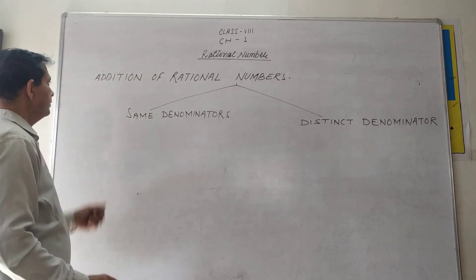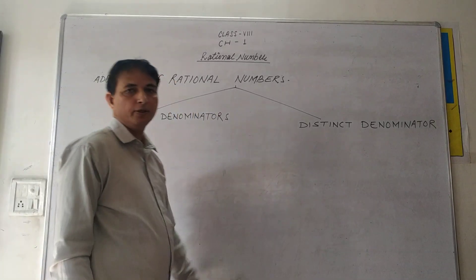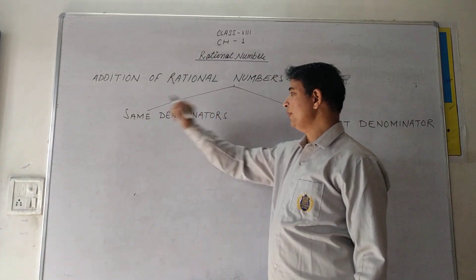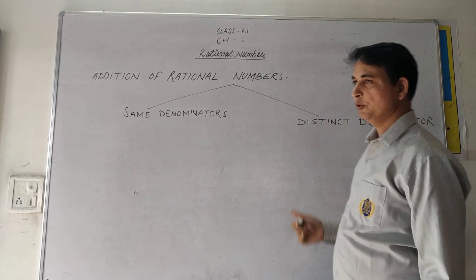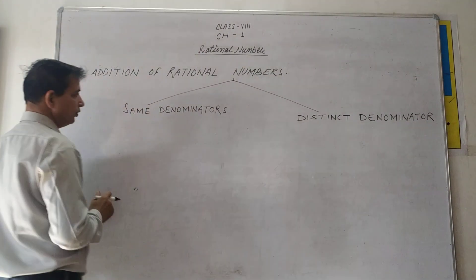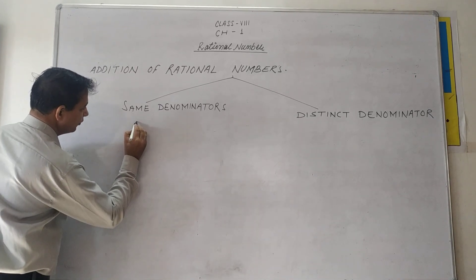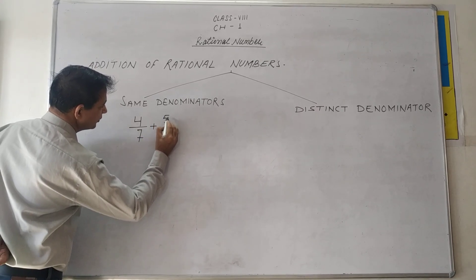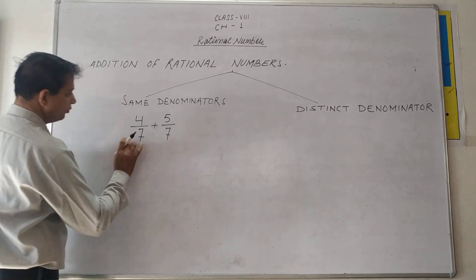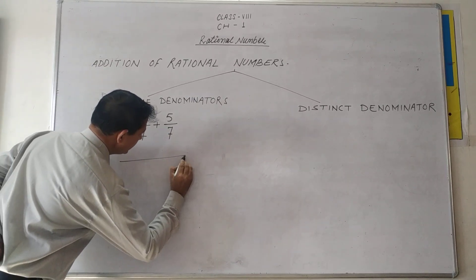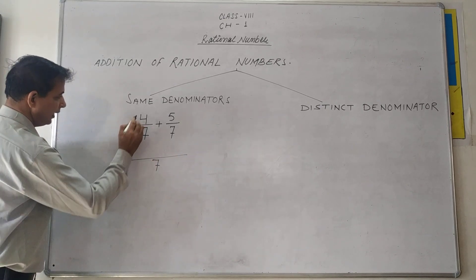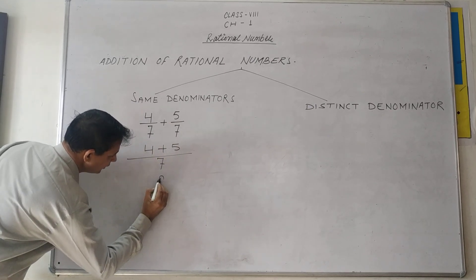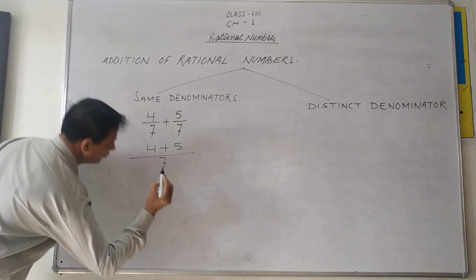Now, properties of rational numbers. First: addition of rational numbers. Addition is divided into two types — same denominator and different denominator. For same denominator, suppose you have 4 upon 7 and 5 upon 7. The denominator is the same, so LCM is 7, and the numerator is simply 4 plus 5, giving 9 upon 7.